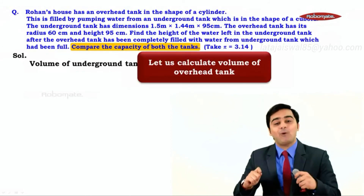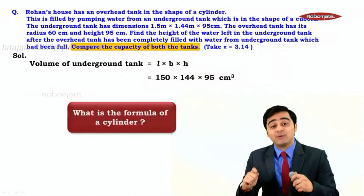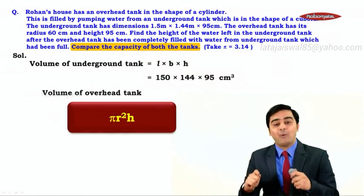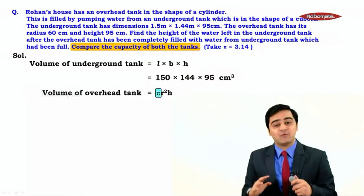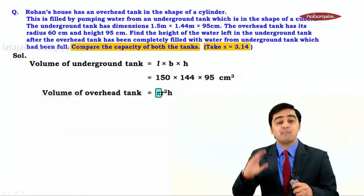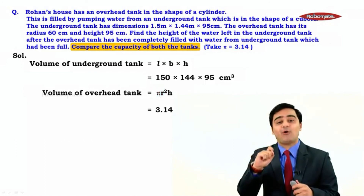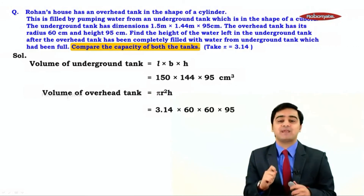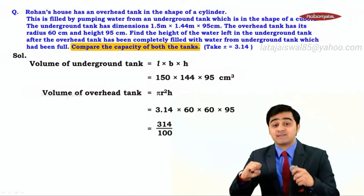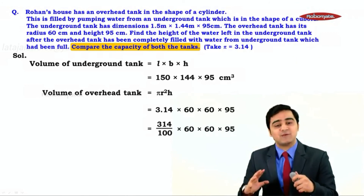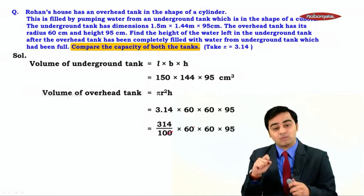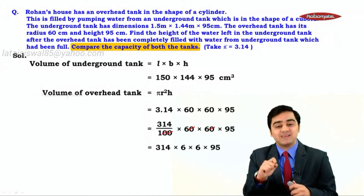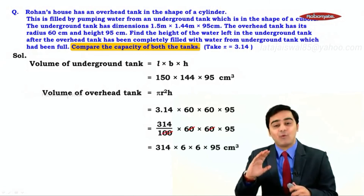The formula for the volume of a cylinder is π r². The volume of the overhead tank equals π r² h = 3.14 × 60 × 60 × 95. Writing 3.14 as 314/100 and canceling both zeros with the 60s, we get 314 × 6 × 6 × 95 cubic centimeters.